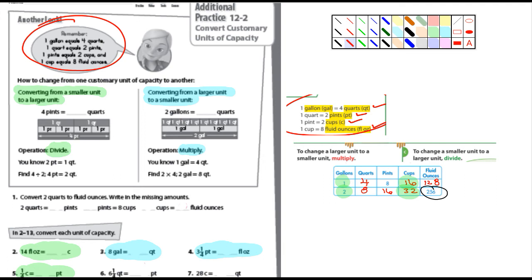One gallon is equal to four quarts. One quart is equal to two pints. One pint is two cups, and one cup is eight fluid ounces.